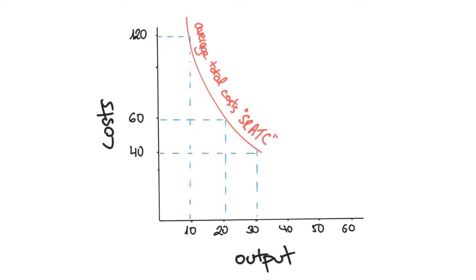This can be illustrated by the following cost curve, the short run average total cost. It shows that the more we produce, the lower the average costs are.